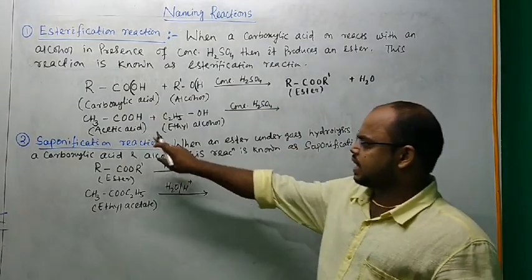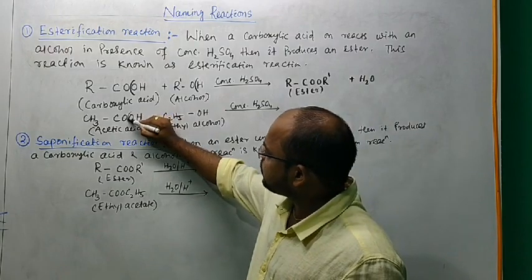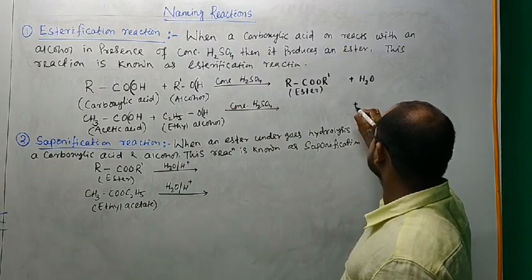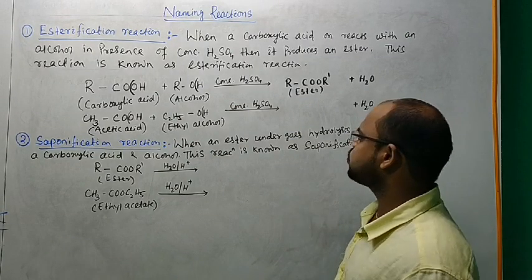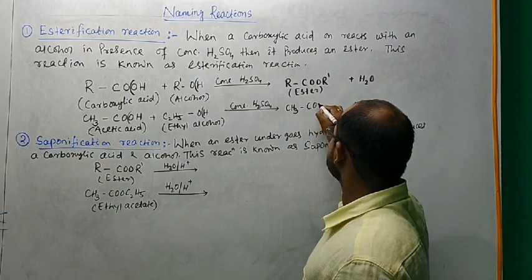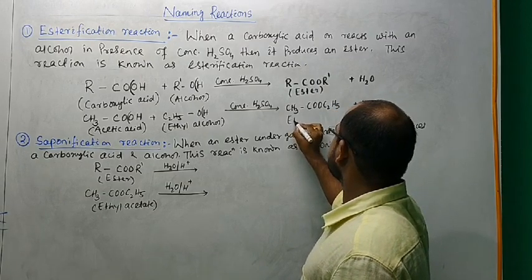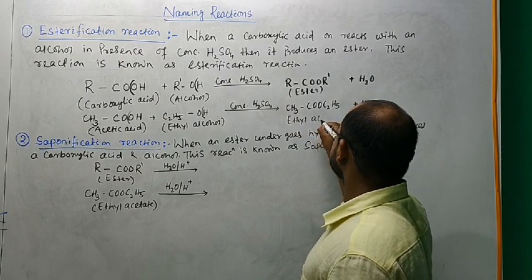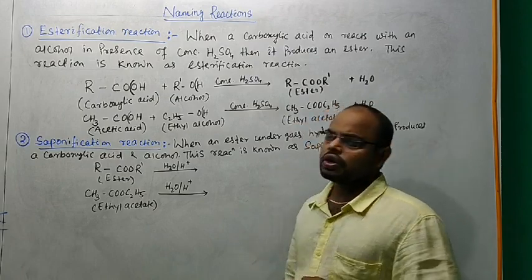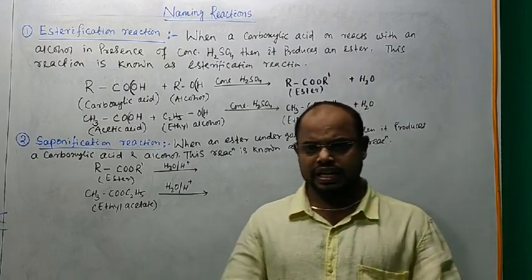Let's get an example. CH3-COOH, acetic acid, plus C2H5OH, ethyl alcohol, produces H2O plus CH3-COO-C2H5. This is known as ethyl acetate. This is also an ester. So formation of ester is normally known as esterification reaction.